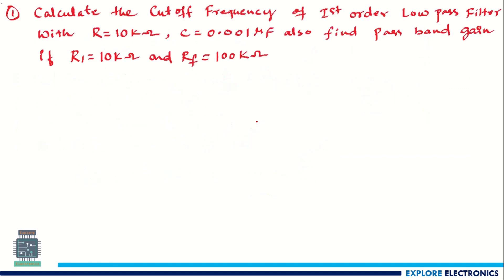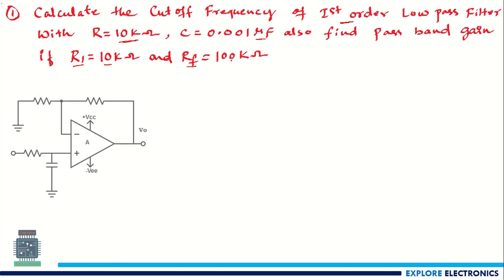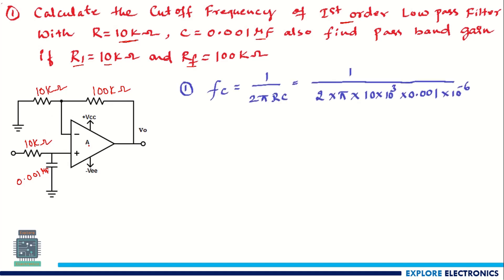Problem 1: Calculate the cutoff frequency of a first-order low pass filter with R = 10 kΩ and C = 0.001 μF. Also find the passband gain if R1 = 10 kΩ and Rf = 100 kΩ. First, draw the circuit with R1 = 10 kΩ, Rf = 100 kΩ, R = 10 kΩ, and C = 0.001 μF, then apply the cutoff frequency formula.